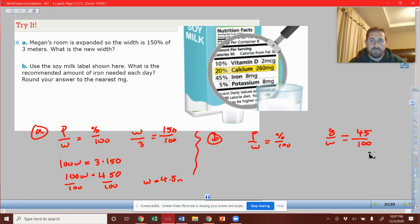So you can see the cross multiplication that would occur. 45 times W. And that's going to be 8 times 100. So 800, right? So we get 45W equals 800. So we're going to have to divide by 45.